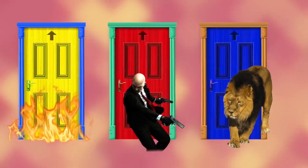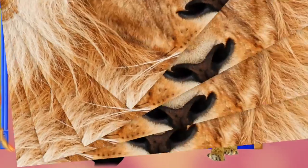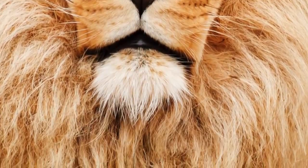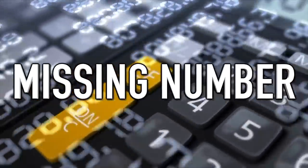You should have chosen number three, the lion door, if you're a smart survivalist. This is because it hasn't eaten in three years, meaning it won't be alive when you open the door.